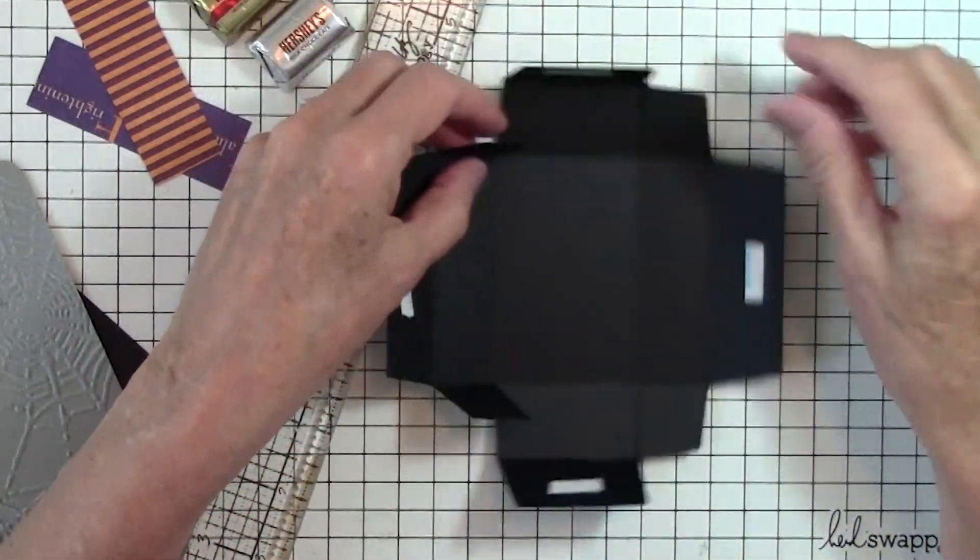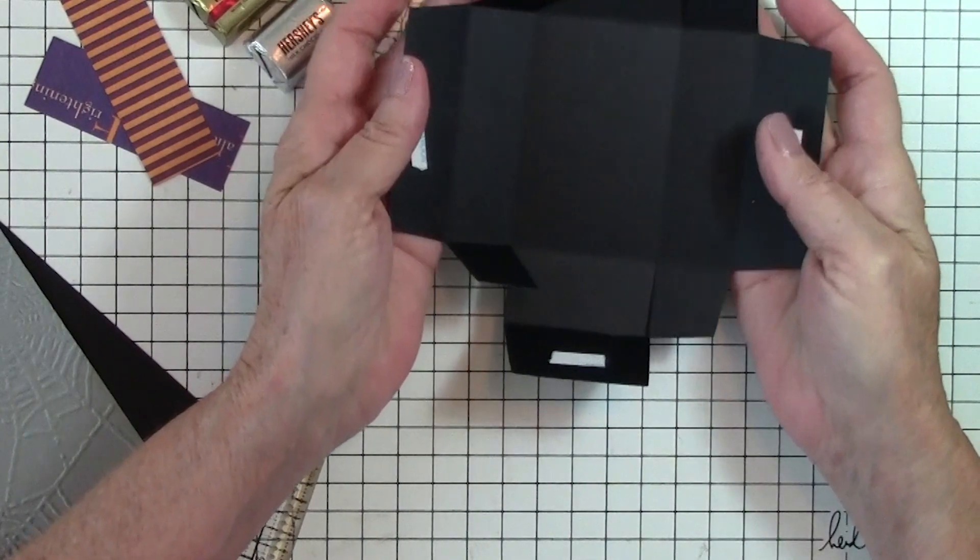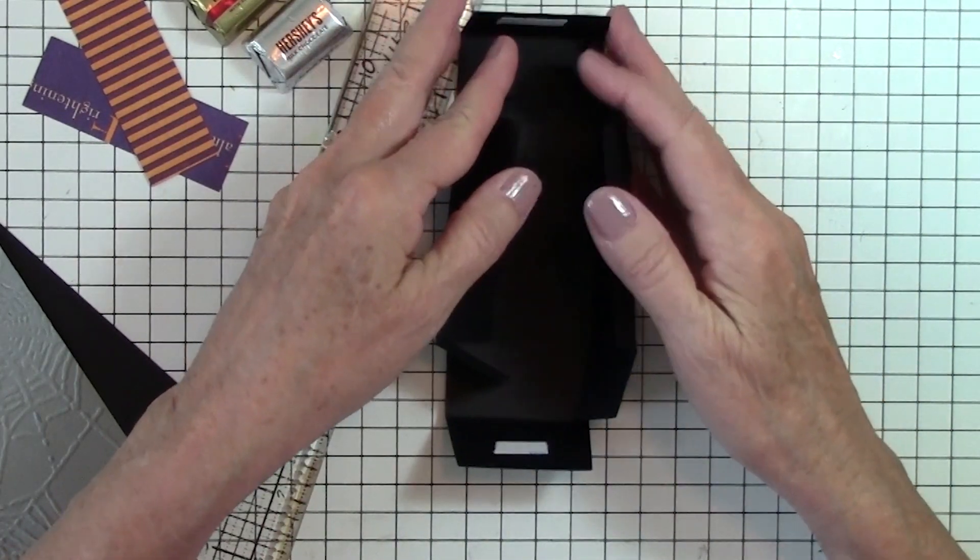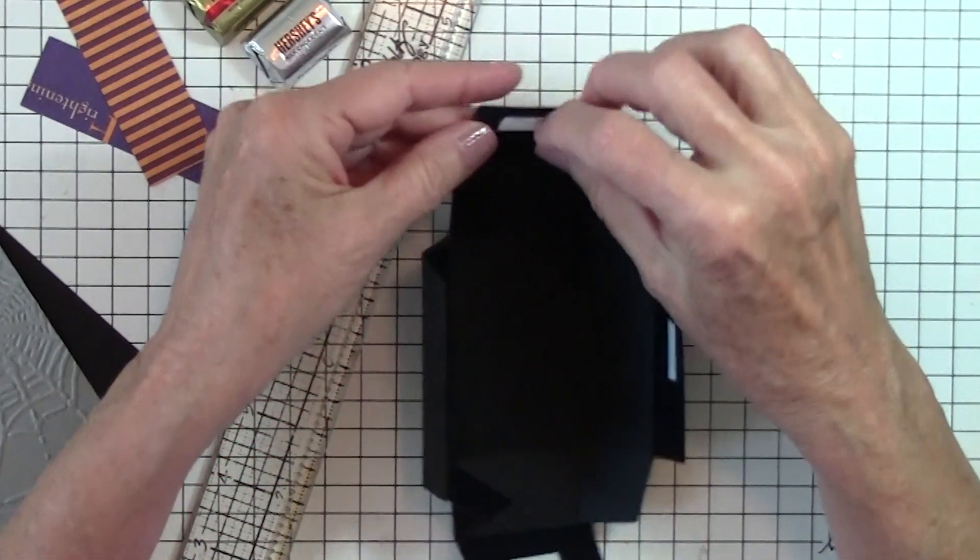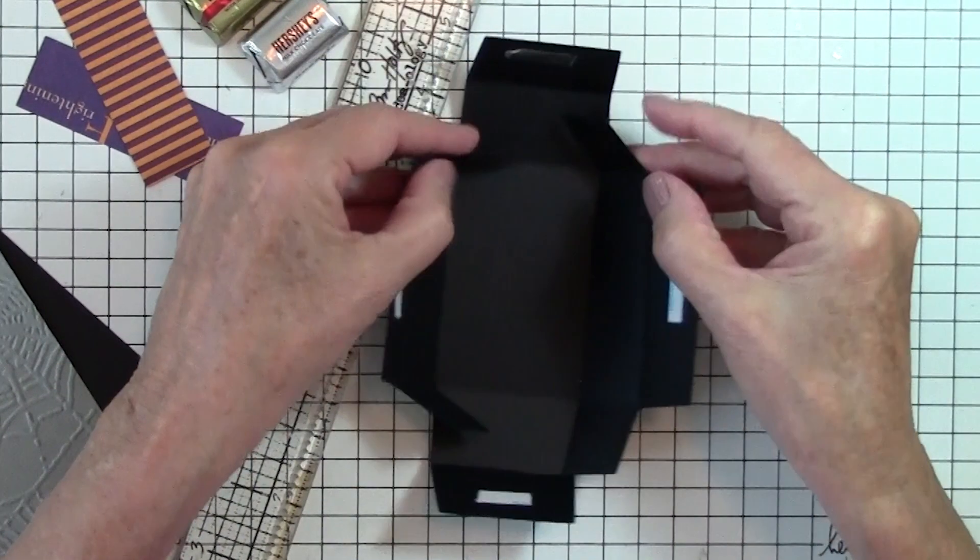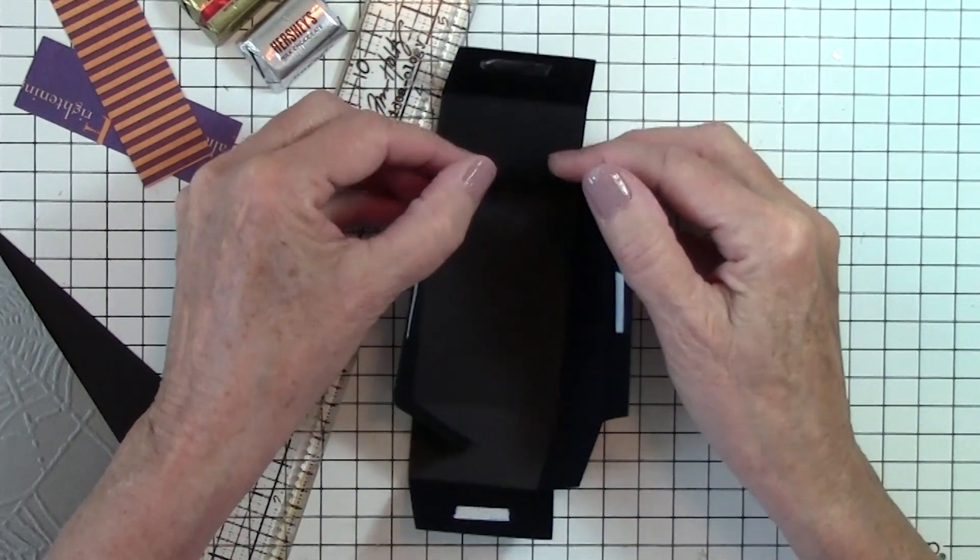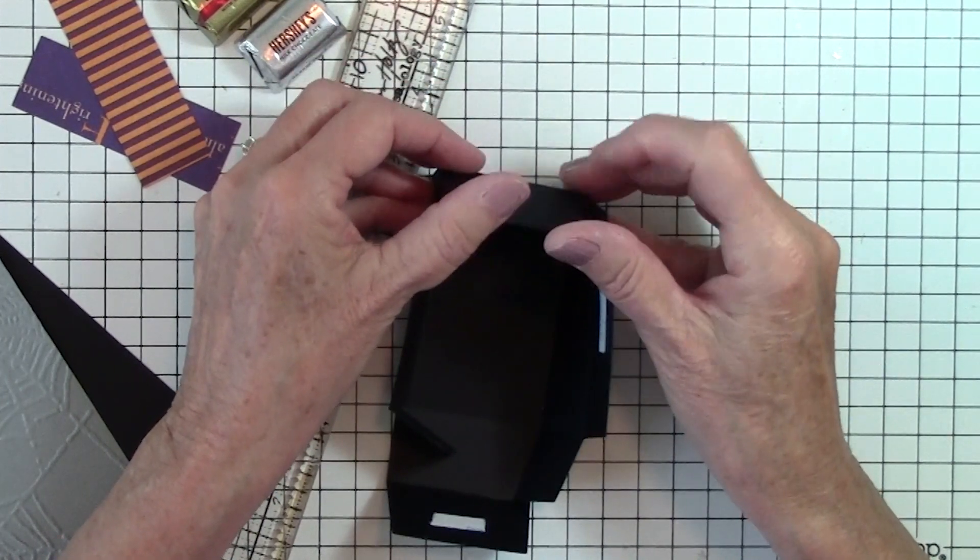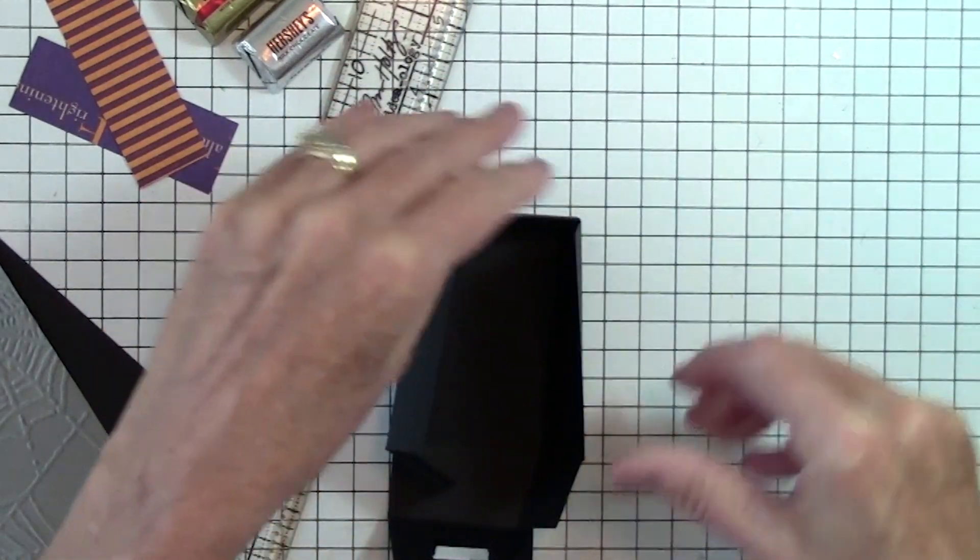Now all our folds are done, we're going to take our long sides and press, I guess I need to take the score tape off first, there we go. Take your long sides, press them up, and go over and seal it.